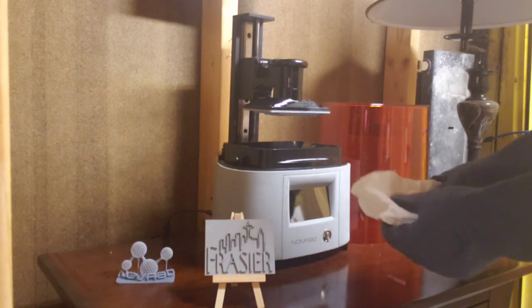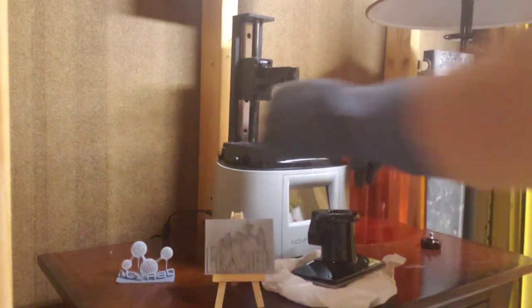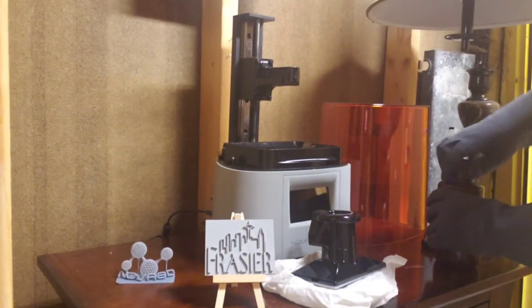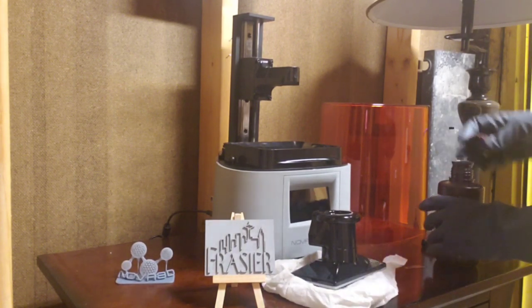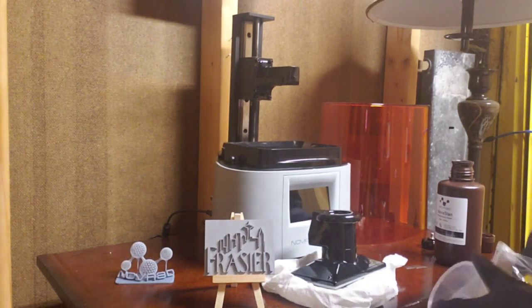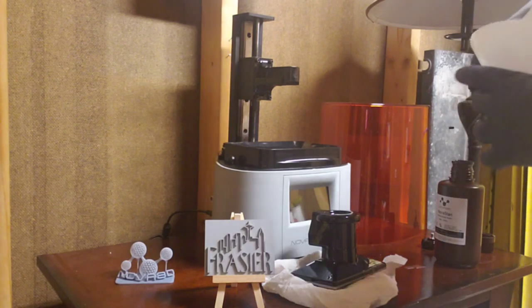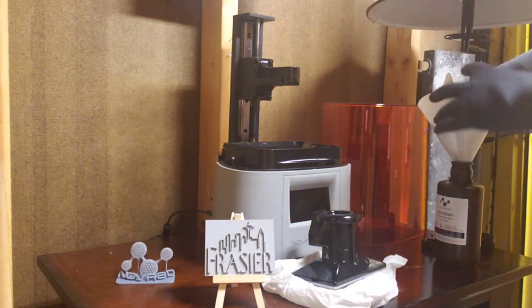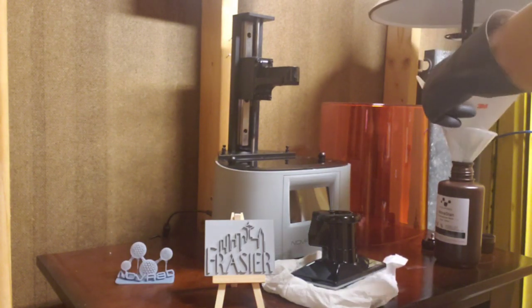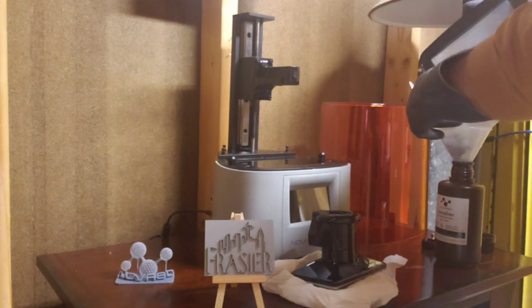Now in the last couple of prints, what I've done was taken this part off before I take the vat out. That way this doesn't continue to drip down. Now the good thing is with the unused resin, that can go right back in to the jar. Now Nova 3D has packaged all of this stuff together. They send it all together. So there's really nothing extra to buy. It's got a little spout right there. Dump it down in there.